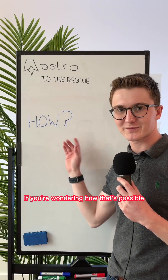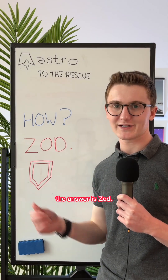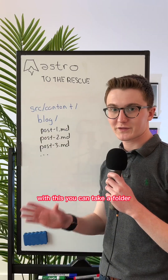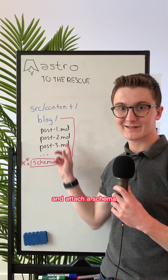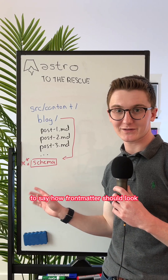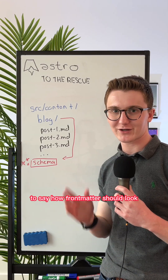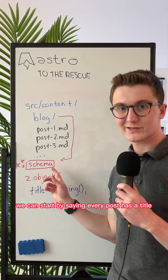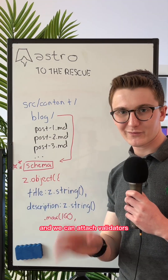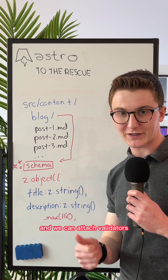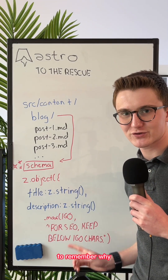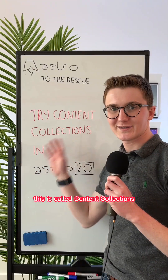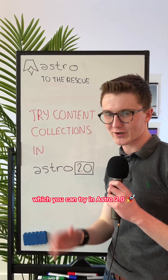If you're wondering how that's possible, the answer is Zod. With this, you can take a folder of Markdown or MDX and attach a schema to say how front matter should look. We can start saying every post has a title, and we can attach validators and even add a custom error message to remember why. This is called Content Collections, which you can try in Astro 2.0.